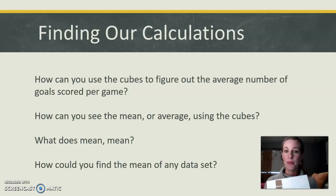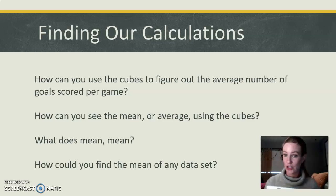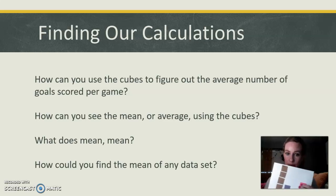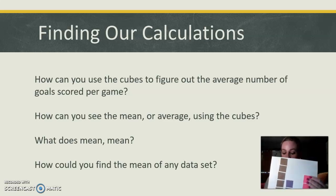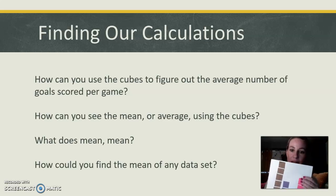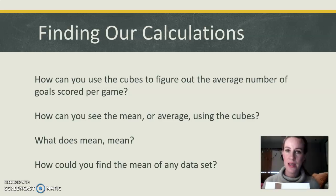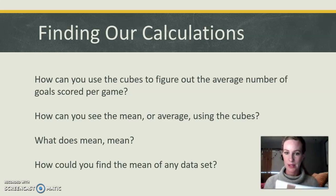As I mentioned at the beginning of this lesson, the mean or average is the total number of scores divided by how many games. So how could you use these cubes? Easily — you could count them: 1, 2, 3, 4, 5, 6, 7, 8, 9, 10, 11, 12, 13, 14, 15, 16, 17, 18. So the mean is 18 divided by how many games we had — six games. 18 divided by 6 is 3. So their average goals scored per game is 3.